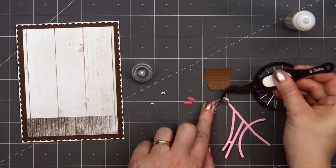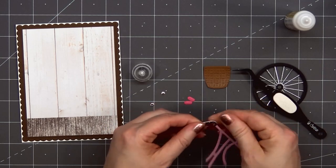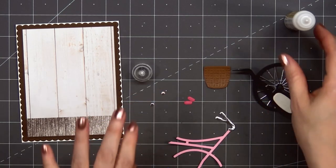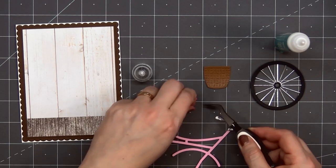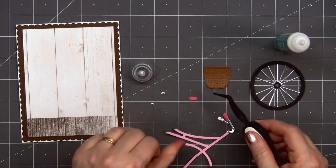The main body of the bike I used some light pink cardstock. I have some more silver mirror cardstock for the handlebars and some darker pink cardstock for the actual handles.